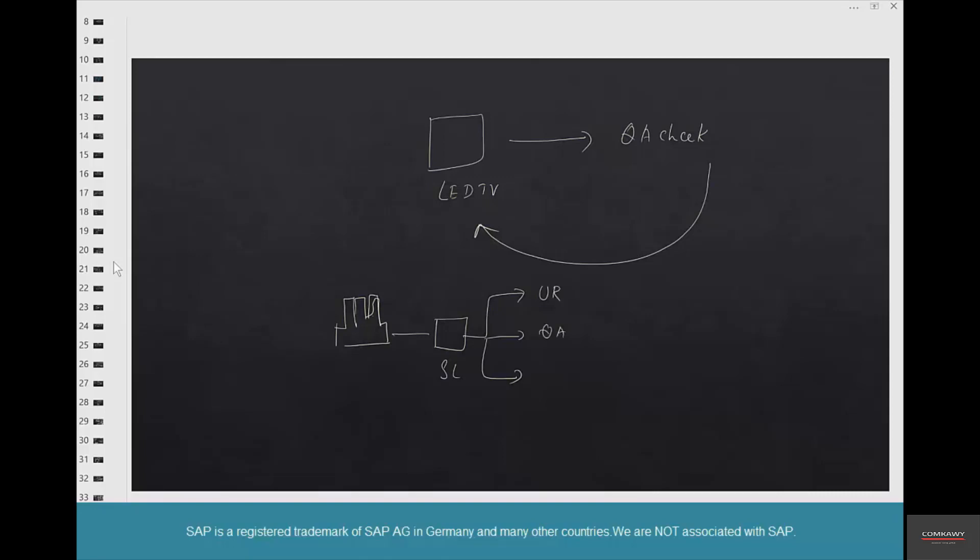So from unrestricted, you could move that to quality, in which case nobody else can sell it because it's a quality stock. So you move one TV, and how you move that using transfer posting. You move one TV from unrestricted to quality.